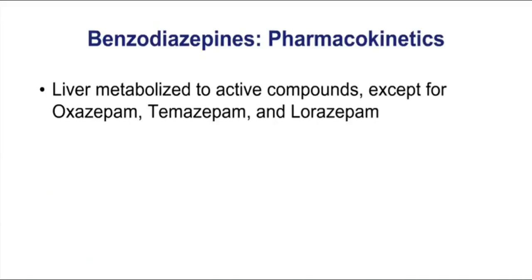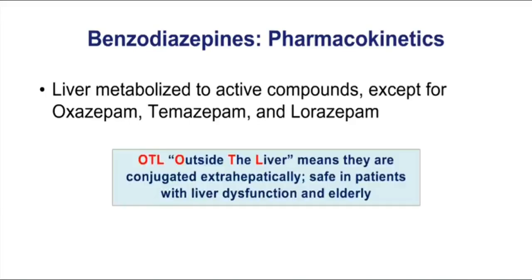When we look at the pharmacokinetics of benzodiazepines, the rule is these drugs are metabolized by the liver, most often to active compounds — many times with multiple active metabolites. But there are three exceptions: oxazepam, temazepam, and lorazepam. A way to remember these three is to take the first letter of each drug's name — OTL — and remember the phrase 'outside the liver.' Outside the liver means these drugs are conjugated extrahepatically, metabolized outside of the liver.